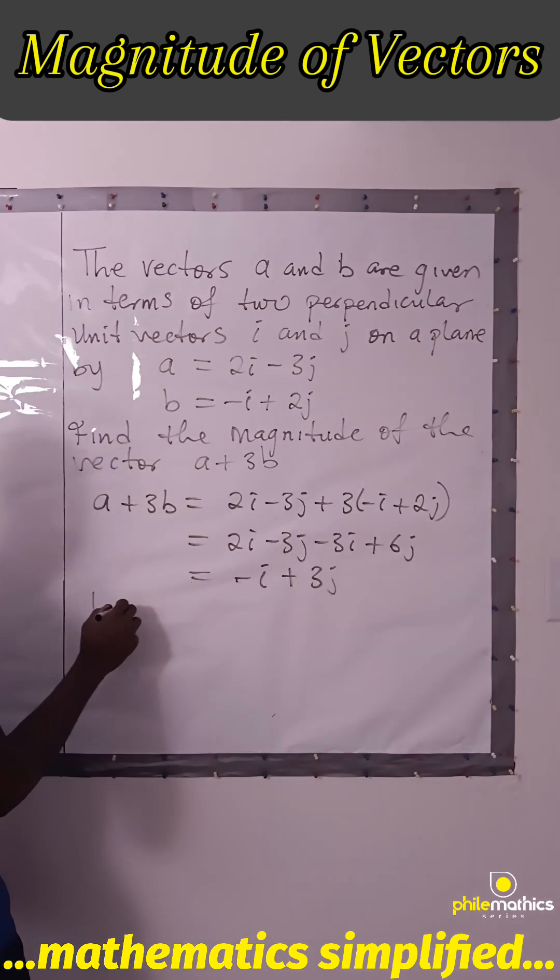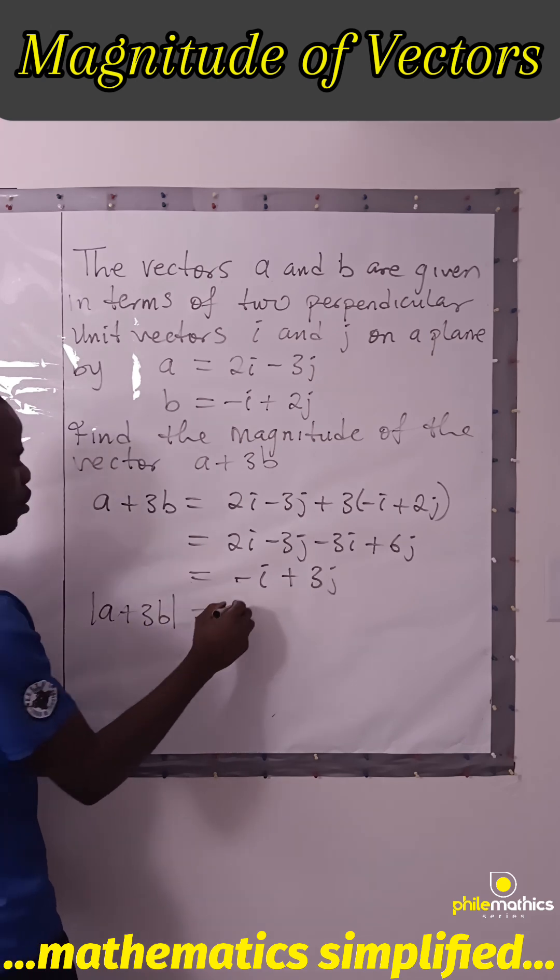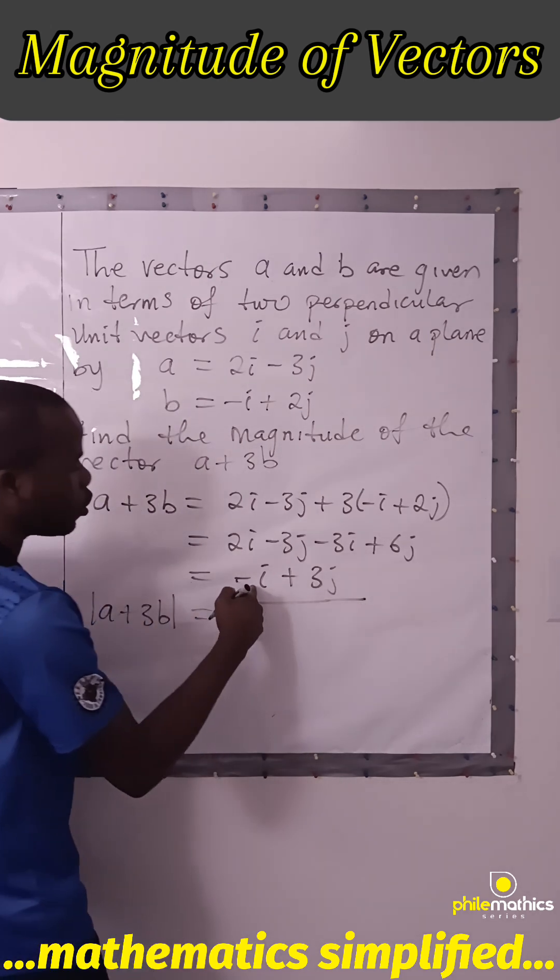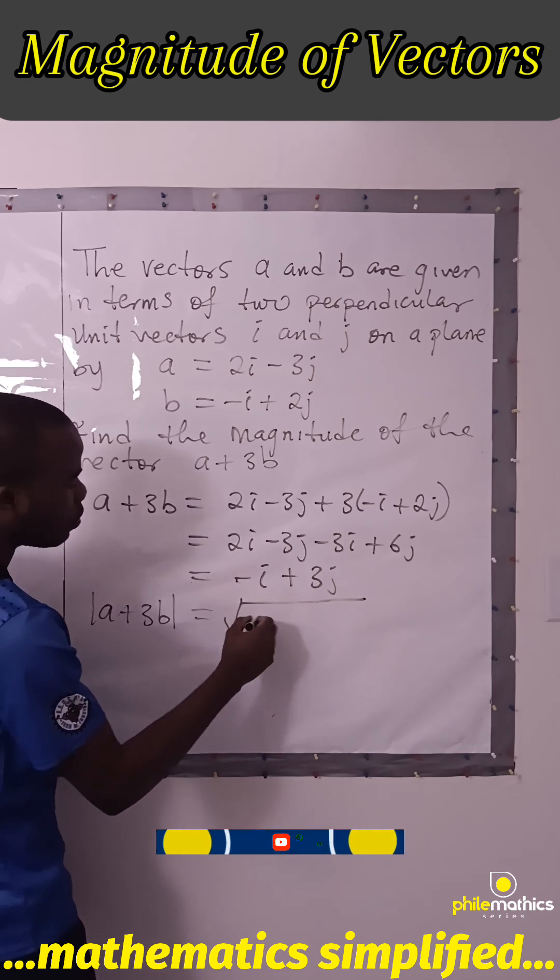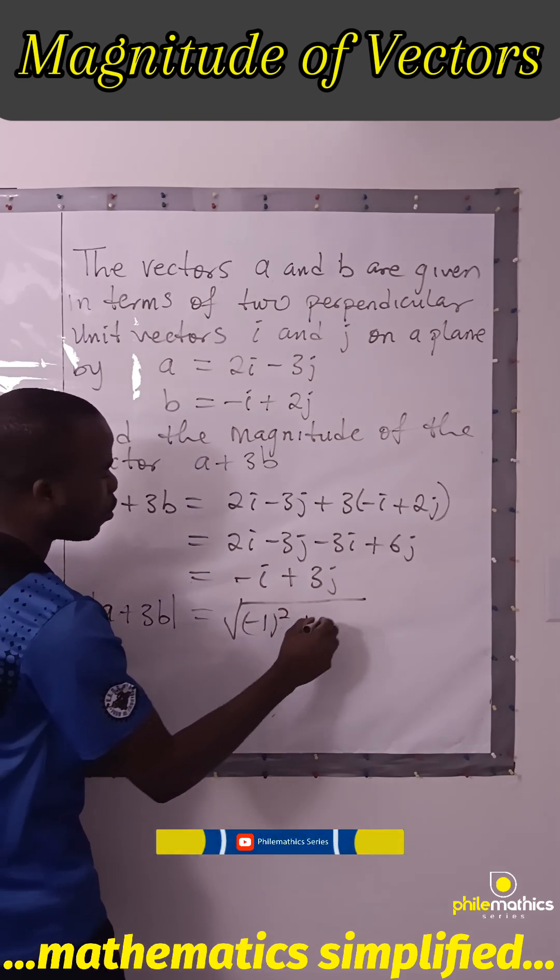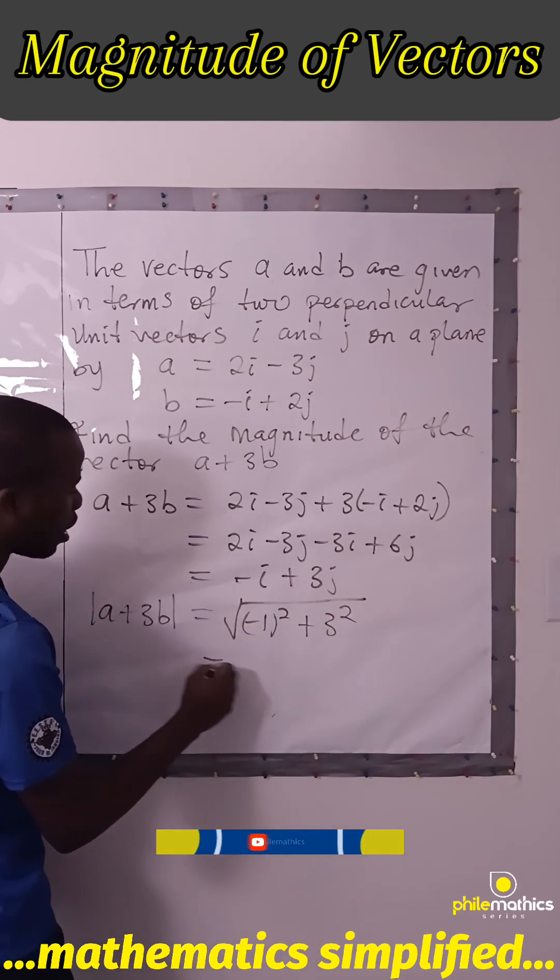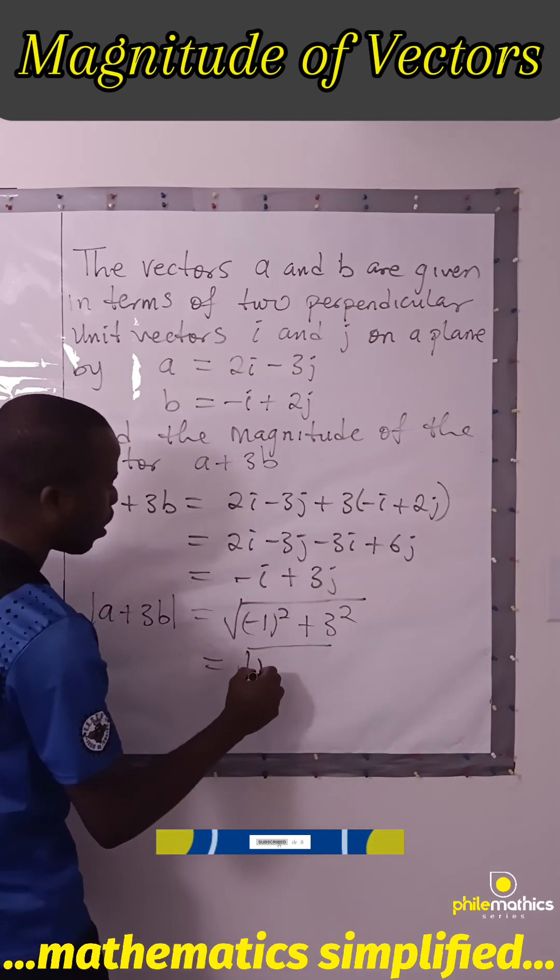The magnitude of A plus 3B will be square root of the square of each of their coefficients. This is minus 1 squared plus 3 squared, and this is square root of 1 plus 9.